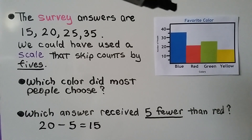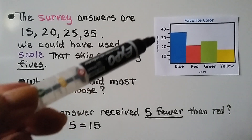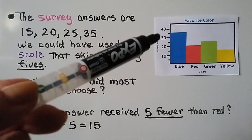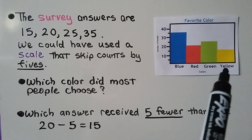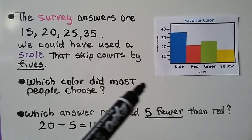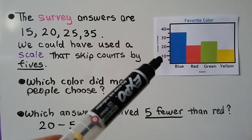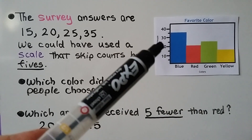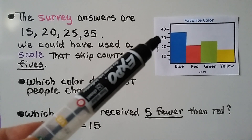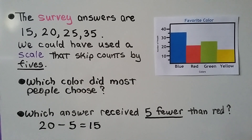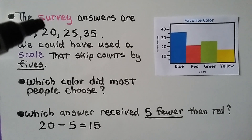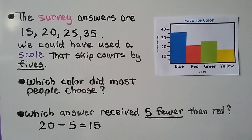This bar graph is about favorite colors. The vertical axis shows the number of people that answered, and the horizontal axis shows the colors — the answers people gave. The scale skip counts by ten: 10, 20, 30, 40. Because the answers are 15, 20, 20, 25, and 35, we could have used a scale that skip counts by fives instead.